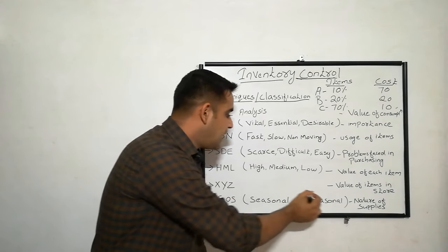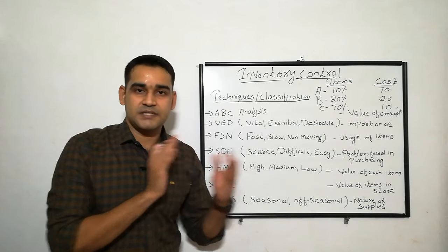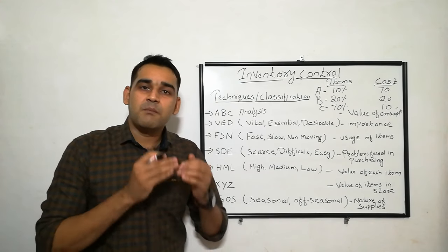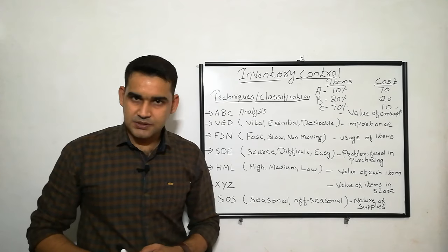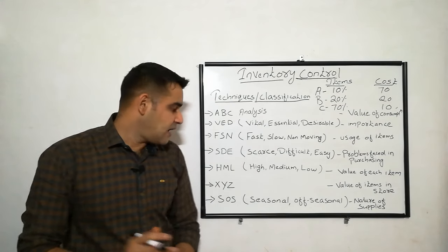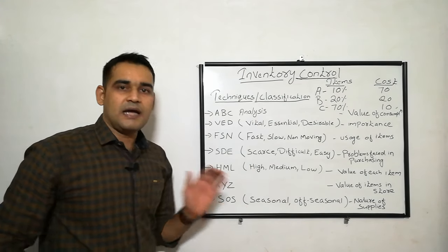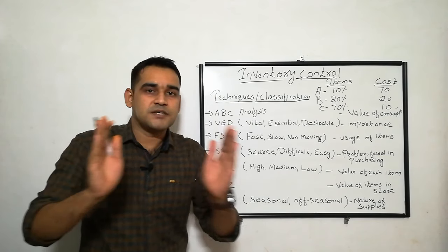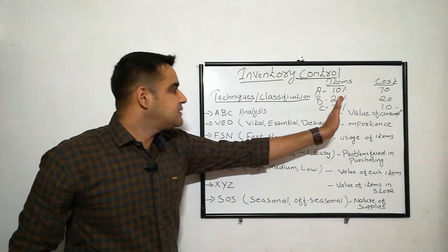The last one is SOS analysis — Seasonal and Off-Seasonal. It is based on the nature of supply and availability. For example, mango: at a particular season you get plenty of mango at a cheap rate, but in off-season you have to pay more. So seasonal items are available cheaply in season but cost more off-season. You classify items accordingly in SOS analysis.